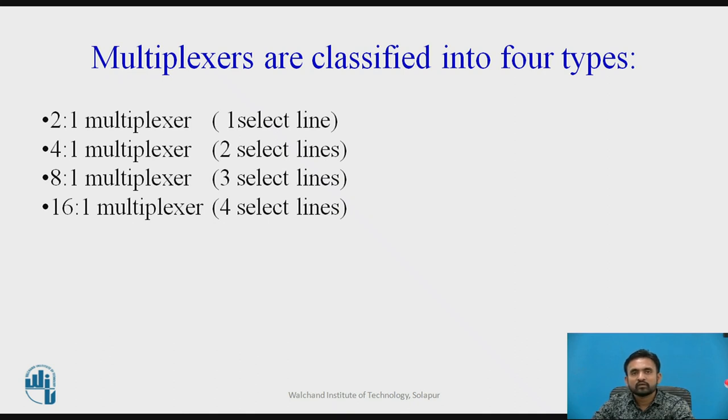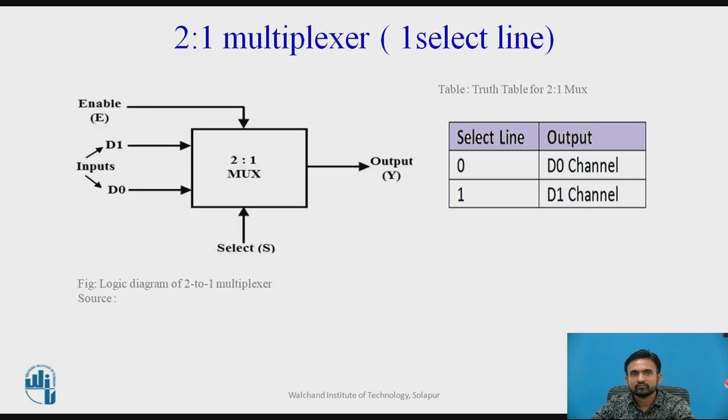Now, I will continue the multiplexer part. Multiplexer we can design or we can classify into four different categories or different types. One is 2 as 1 multiplexer, 4 as 1 multiplexer, 8 as 1 multiplexer, 16 as 1 multiplexer. And for every individual different type, the required select lines or control logic signals are different. That decides with the formula 2 to the power n equals to m. If the number of signals are 4, the select lines are 2.